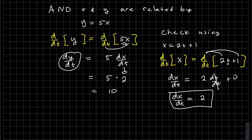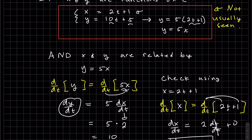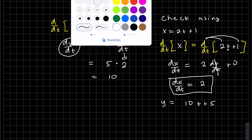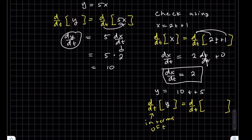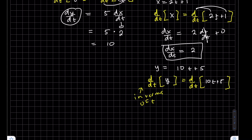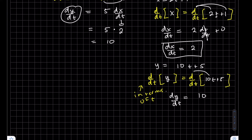Now let's find dy/dt using our second equation: y equals 10t plus 5. We're going to take d/dt of both sides. The left side gives dy/dt. The right side is just 10, because dt/dt cancels, and the derivative of the constant 5 is 0. So dy/dt equals 10. We can see here, they're equal — both sides give 10.